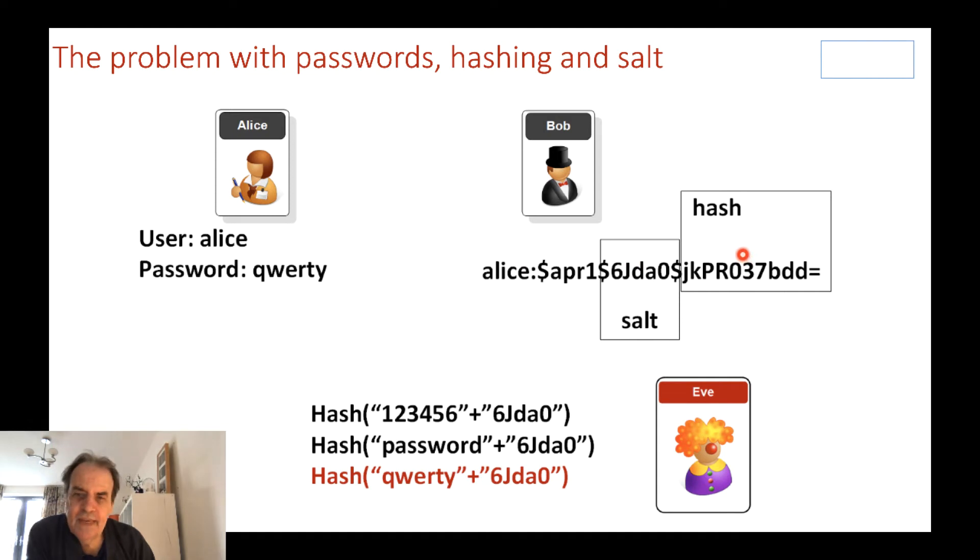The problem with this though is that the salt is stored along with the hash value. So if Eve gets hold of this record, all she has to do is look at a standard dictionary or even brute force, add the salt on, and she can actually recover Alice's password.